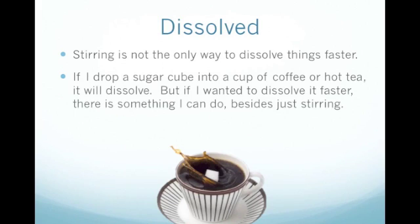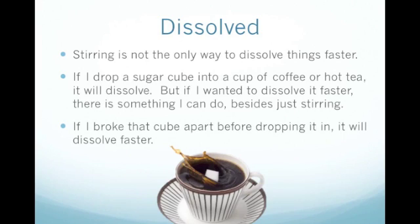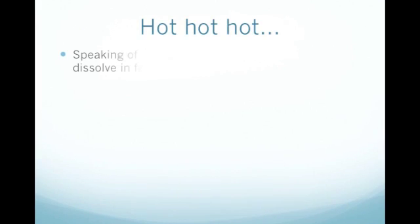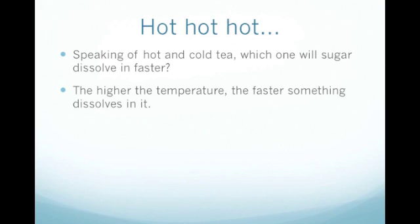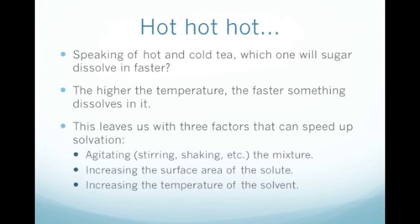There are some things that are going to help us dissolve chemicals into solutions easier, and we got to see this during the demonstration in class. Stirring was one of the ways to dissolve things, but it wasn't the only way. I could drop a whole sugar cube into a cup of coffee or hot tea and it will dissolve. But if I wanted to dissolve it even faster, we saw this when I took the Alka-Seltzer and crushed it up — if you break it apart before you put it in, it will dissolve even faster. And of course, sugar dissolves way faster in hot tea than it does in cold tea.